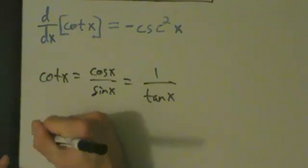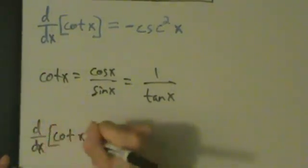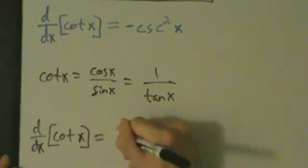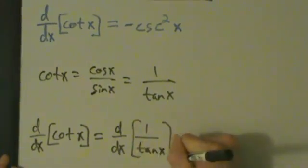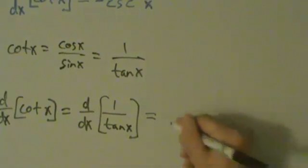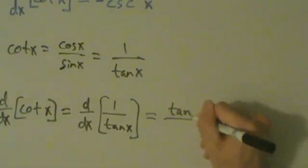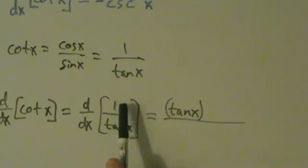So anyway, d/dx of cotangent of x equals d/dx of 1 over tangent of x. All right, so quotient rule tells us that that's going to be bottom, which is tangent of x, times the derivative of the top. The top is 1. It's a constant, so its derivative is 0.